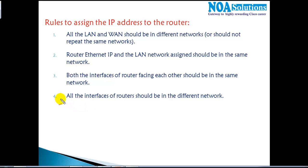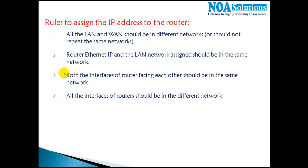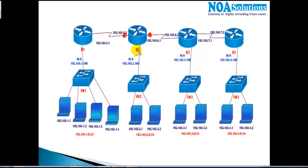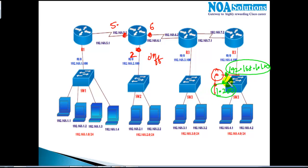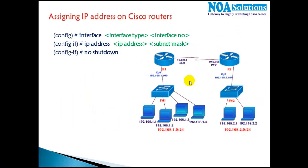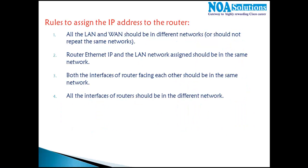The fourth and final rule: all interfaces of a router must be in different networks. If you follow the first three rules, this fourth rule is automatically satisfied. On a router with three interfaces, all three must be on different networks — for example, 192.168.5.0, 192.168.6.0, and 192.168.2.0. If you assign the same network to two interfaces on the same router, you will get a 'network conflict' error, even if the individual IPs are different — because they belong to the same network, it will create a routing problem.